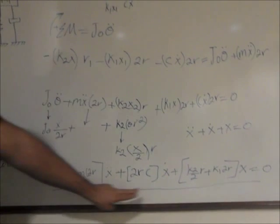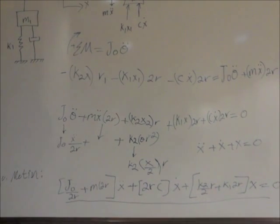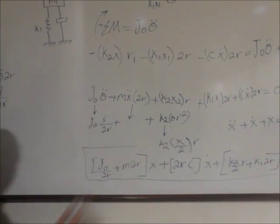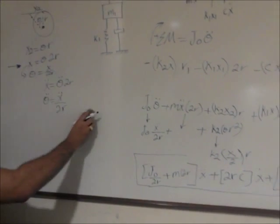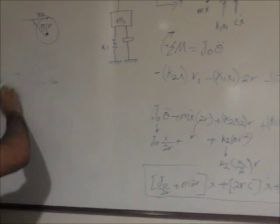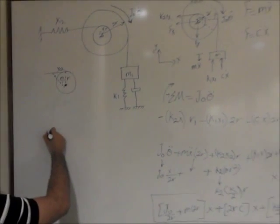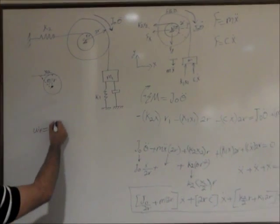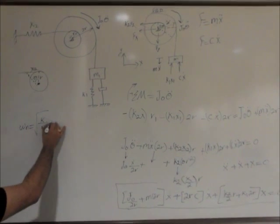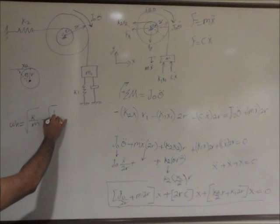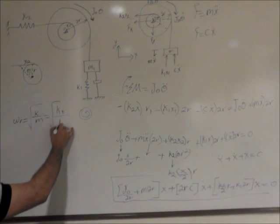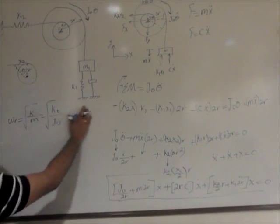And after you get to that point, you can actually solve for the natural frequency based on this equation. And your natural frequency is considered as omega n equals square root k over m, or kt, which is the translational or rotational spring over the moment of inertia.